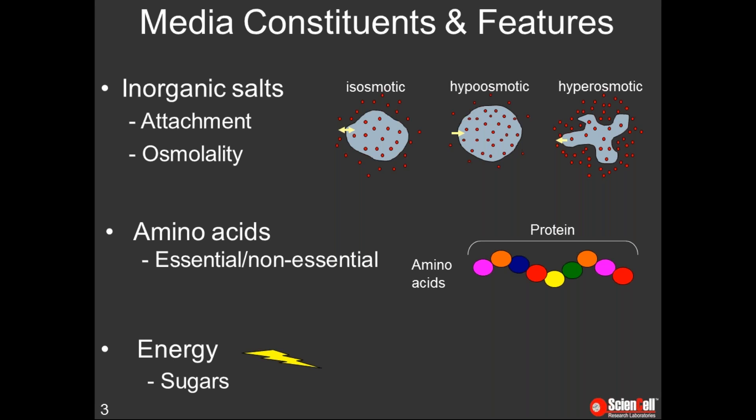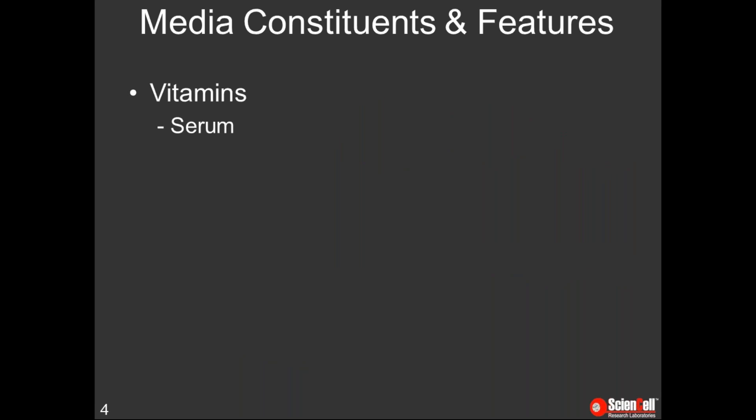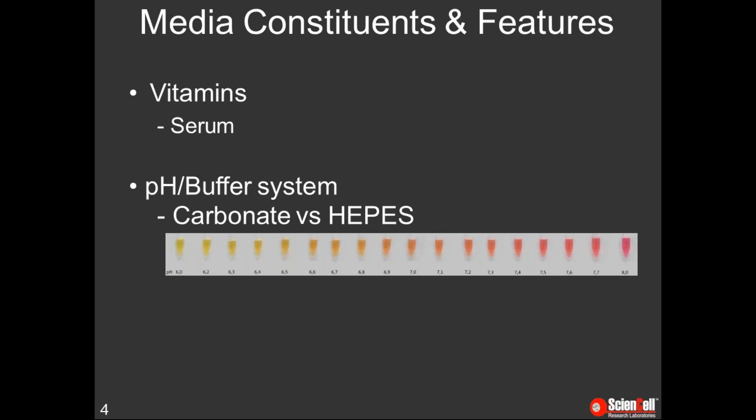In addition to salts and amino acids, cells also need energy. This is often supplied in the media by sugars like D-glucose or galactose. Normal human blood glucose is around 5.5 millimolar and many media are formulated around this concentration; however, some classical media like DMEM have versions with a much higher glucose concentration, either for high-density suspension cultures or because some cell lines grow better at this concentration. Vitamins are also necessary for cell viability and growth and are important cofactors for enzymes. They're present in serum, but in low-serum or serum-free conditions vitamins can be supplemented in the basal media, as they can't be synthesized by cells.